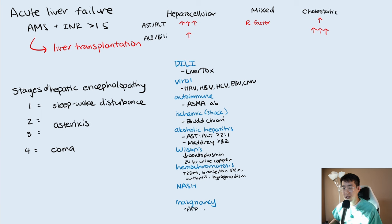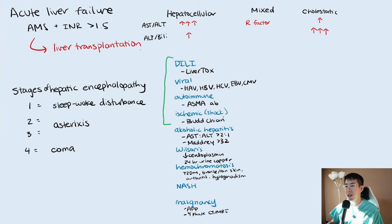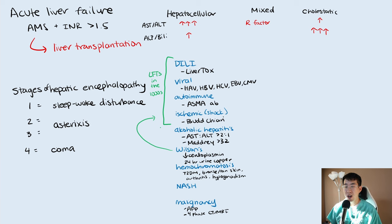For malignancy, we check the alpha-fetoprotein to look for hepatocellular carcinoma. Interestingly, HCC is basically the only cancer you can diagnose solely with imaging — you don't need a tissue diagnosis — and the way you do that is with a four-phase CT or MRI. It's also very important to know that only certain conditions can cause an AST and ALT elevation into the thousands: drug-induced, viral, ischemic, and Wilson's disease can all cause LFTs in the thousands.